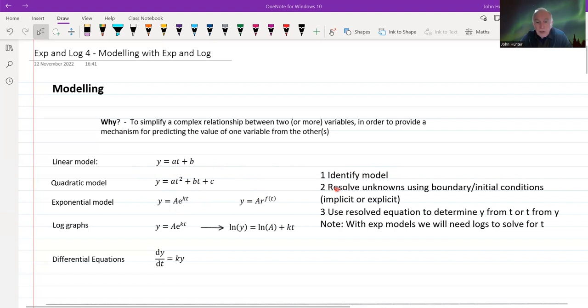Then we have to resolve for these unknowns—A and B, A and B and C or K—using the boundary conditions. Boundary conditions are a pair of values of Y and T that, if we substitute them into the equation, will help us to actually resolve for the unknowns. Initial conditions are a special form of boundary conditions, basically where T equals 0, tends to relate to time-based problems. And then once we've resolved, we've got a fully resolved equation, and we can use that in order to make predictions of Y from T or also predictions of T from Y.